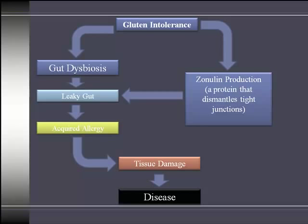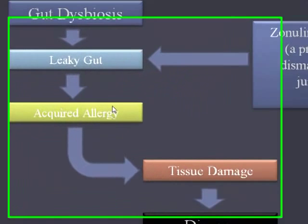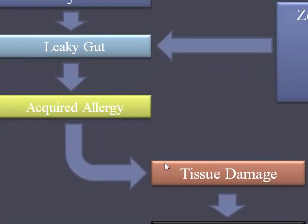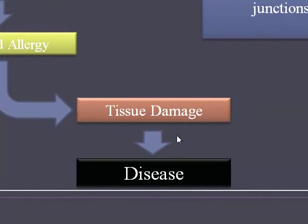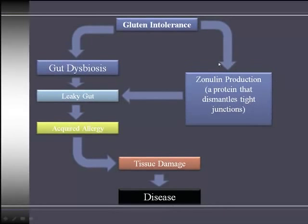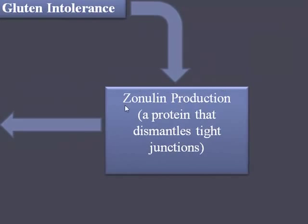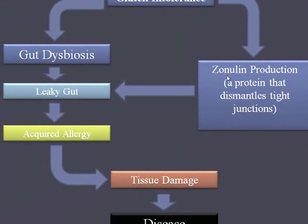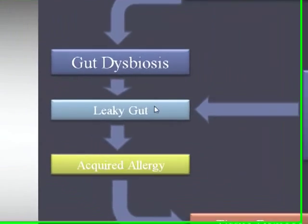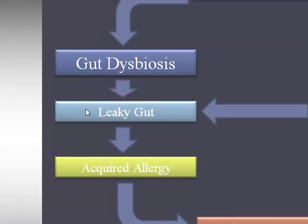Different people will react differently, and as we saw, different allergies lead to inflammation and tissue damage that subsequently leads to disease. About five years ago, a doctor at the University of Maryland discovered a protein called zonulin, which is specific to gluten intolerance — people with gluten intolerance make more of this protein, and zonulin actually breaks down the gut lining, creating leaky gut syndrome.